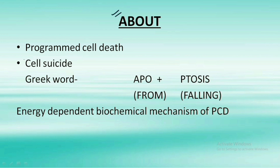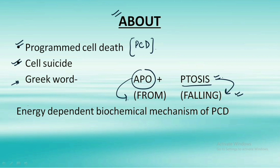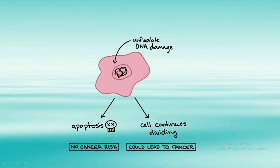Apoptosis can also be named as programmed cell death, abbreviated as PCD, or we can also call it cell suicide. If we look at the origin of the word apoptosis, it comes from Greek — made up of two words: 'apo' meaning 'from' and 'ptosis', so apoptosis in Greek means 'falling from.' It is an energy-dependent biochemical mechanism for programmed cell death.